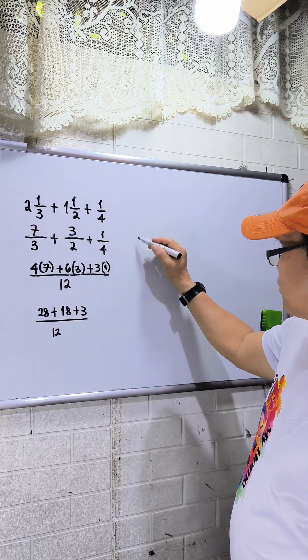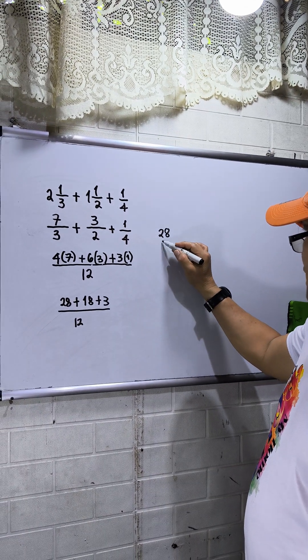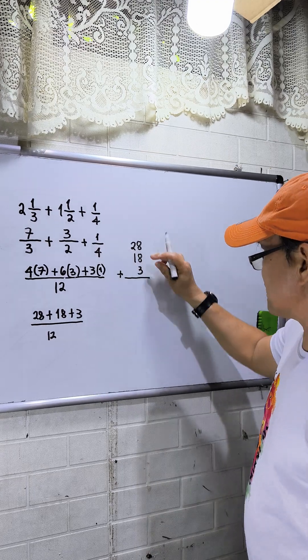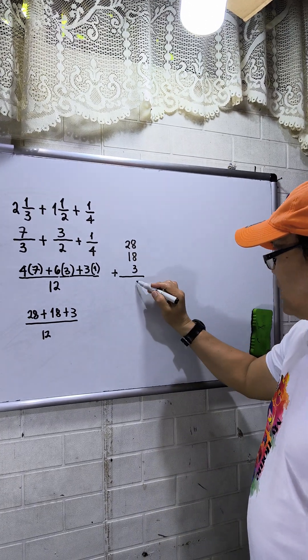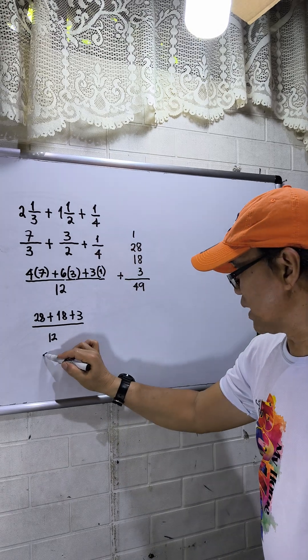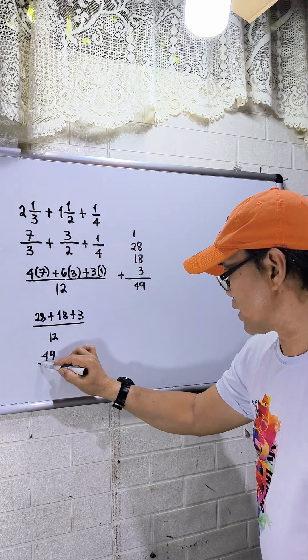28 plus 18 plus 3. 16 plus 3 is 19, carry 1, so this is 4. I have now 49/12. Since 49/12 is an improper fraction, we need to divide 49 divided by 12.